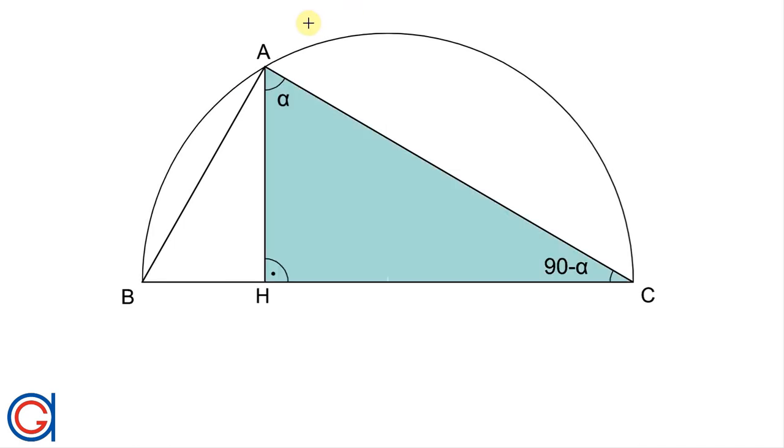So now we are going to demonstrate that the two new triangles that we created when we drew the perpendicular height are proportional to the original triangle. Firstly, we are going to look at the larger of the two new triangles. And as we have already demonstrated that angle C is 90 degrees minus alpha, and we have created a new 90 degree angle, the remaining angle A must be equal to alpha.